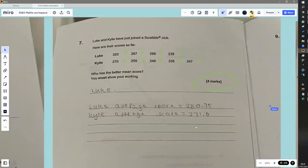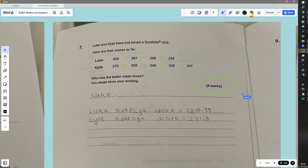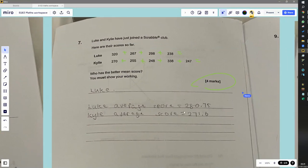So a lot of time, especially in Key Stage 3, you might lose marks if you don't show your working out. This is accurate, the answers are correct. Luke is the one who's got the better mean score. But where do these numbers come from?